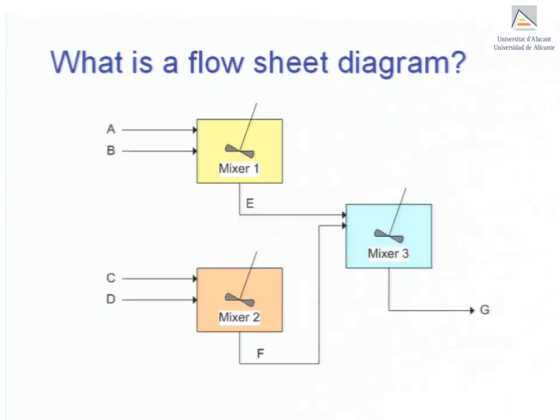The present flow sheet diagram shows three mixers with different streams entering and exiting them. The streams designated A and B enter mixer 1. Stream E exits this mixer. Streams C and D enter mixer 2 and stream F exits from it. Finally, streams E and F are combined in mixer 3 and stream G exits from it.